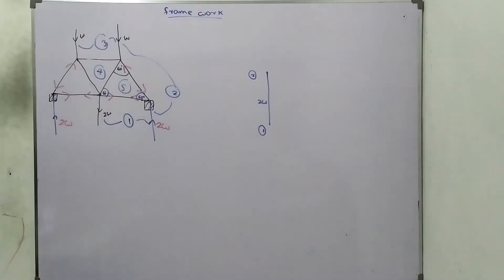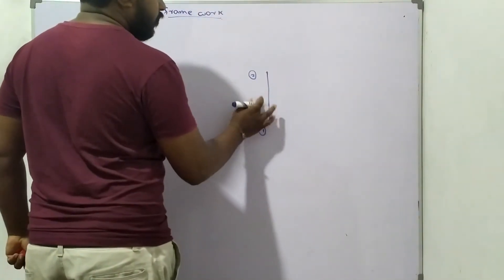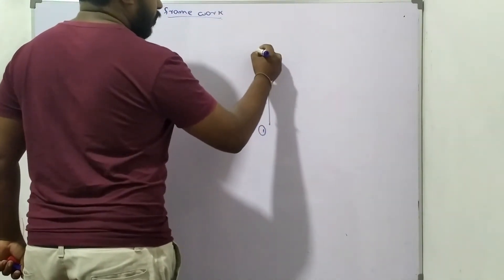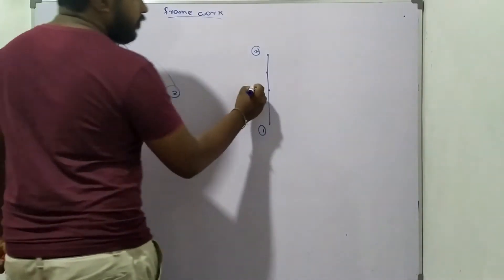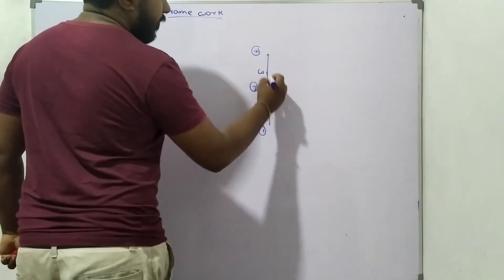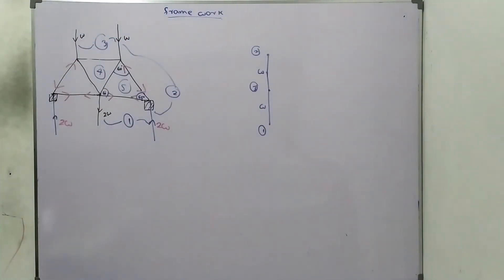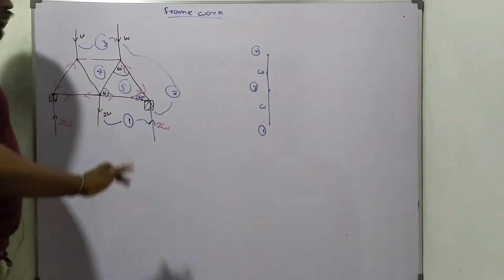The angles are 60°, 60°, 60°, 60°. One to two is 2W. Two to three is W downward, and here it's W and W. One to two, two to three.